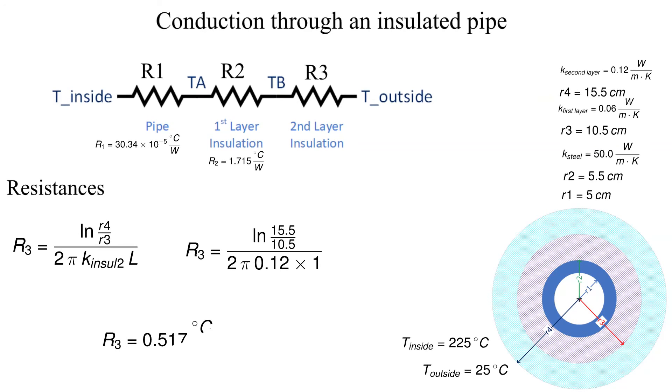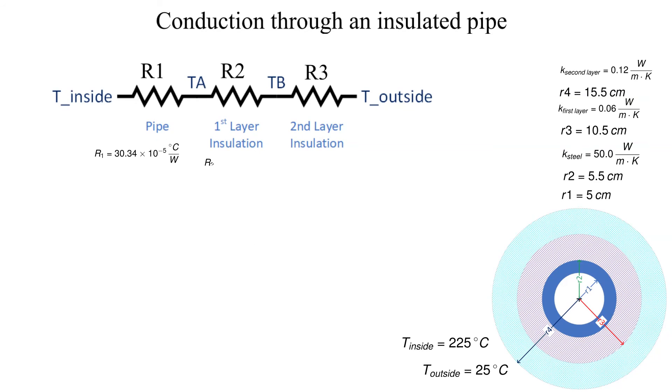Now we use the equation for heat transfer through a thermal resistance network. The heat transfer rate is 89.61 watts.